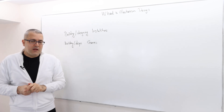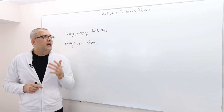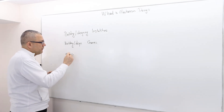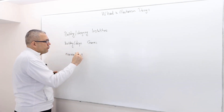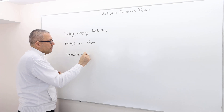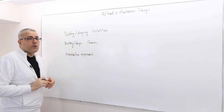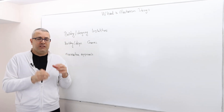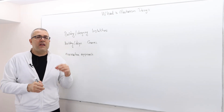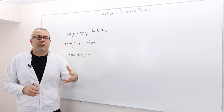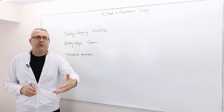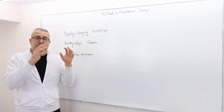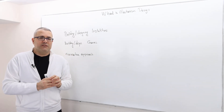Another way of looking at mechanism design is what we call a normative approach for research. Usually in economics, we look at existing institutions and try to explain how they work and how they lead to the outcomes we observe — so the focus is on existing institutions.